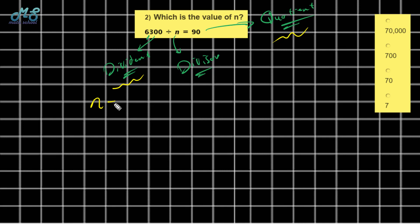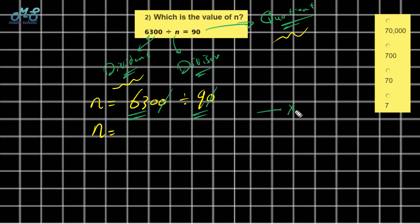So n equals 6,300 divided by 90. First step: cancel one zero. What's the main fact? 63 divided by 9. What number times 9 equals 63? That number is 7. How many extra zeros? Just one, so we get 70. The value of n is equal to 70.